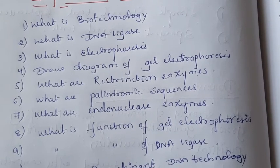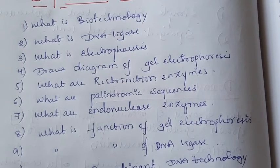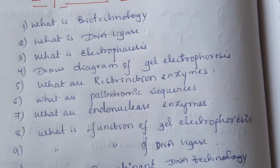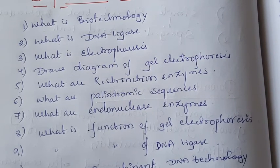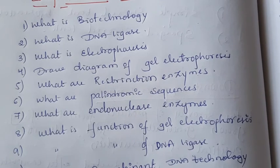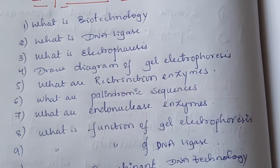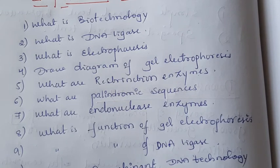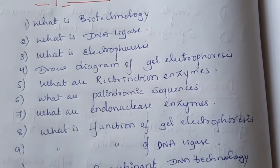Next: draw the diagram of gel electrophoresis. You have to mention the wells, then the separation of DNA fragments — large fragments and small fragments — with anode and cathode. DNA is a negatively charged molecule, so it moves toward the positive electrode during electrophoresis.